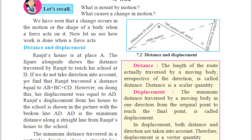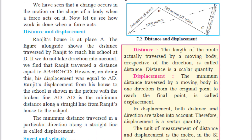Ranjit's house is at place A. The figure alongside shows the distance traversed by Ranjit to reach his school at D. This means that the total distance D is equal to AB plus BC plus CD. Ranjit's displacement from his house to the school is shown in the picture with the broken line AD. This means that AD is the minimum distance along a straight line from Ranjit's house to the school.